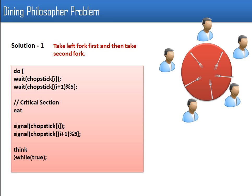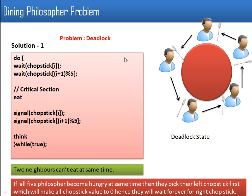Now there is a problem with this solution. Let's say all philosophers want to eat at the same time. Every philosopher will take their left-side fork first — this philosopher picks his left fork, same with this one, same with this one — so everyone picks one left fork and now all forks are occupied. Now every person has only one fork and they will wait for their right fork, but the right fork of each is occupied by a neighbor, creating circular waiting. This is a deadlock condition.